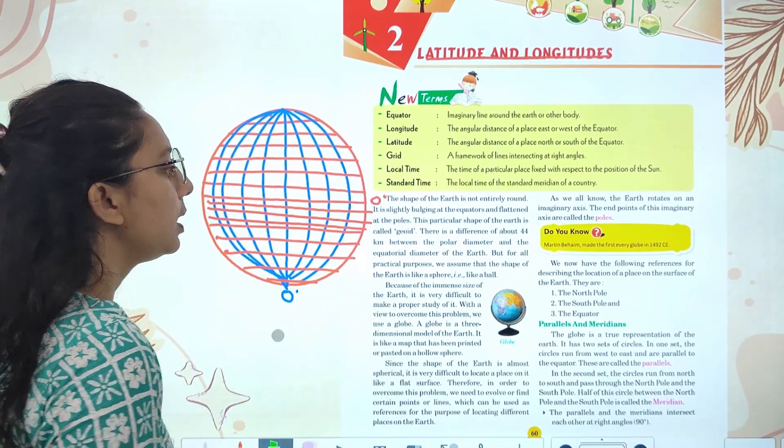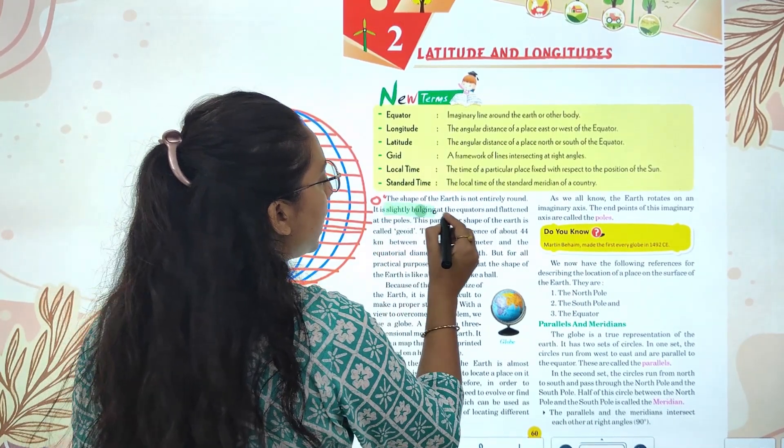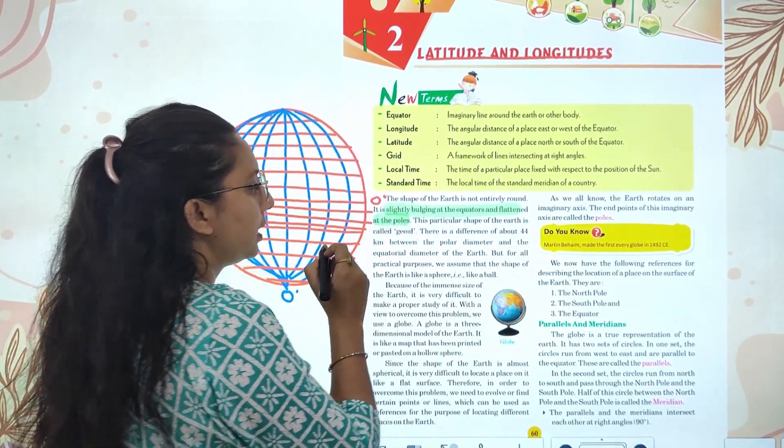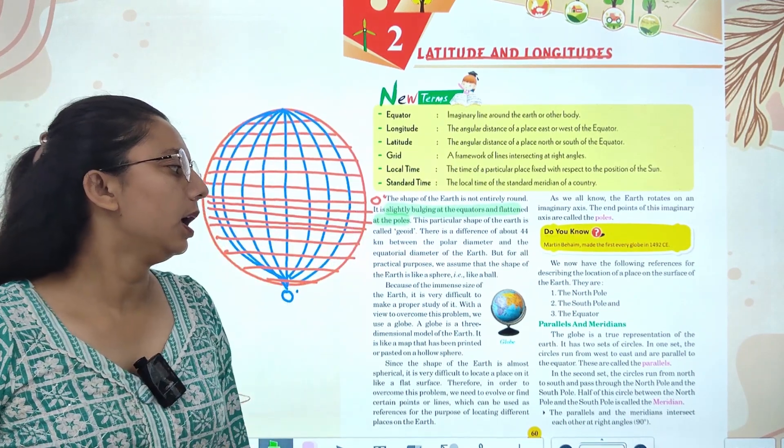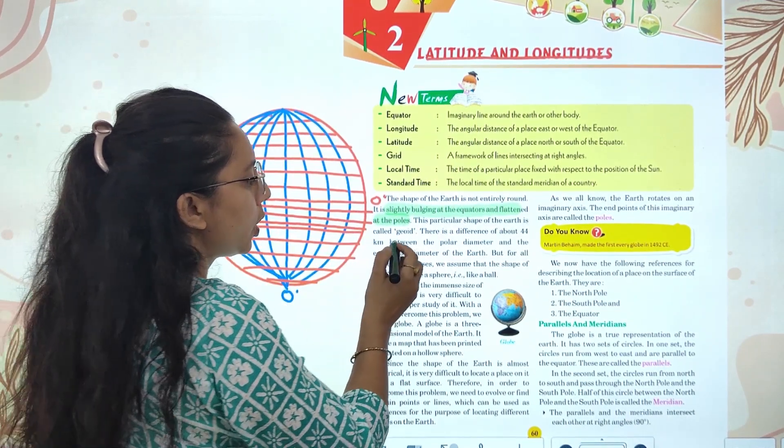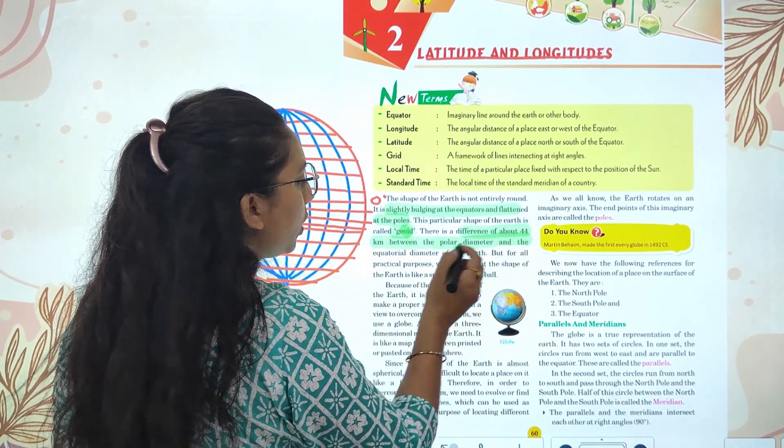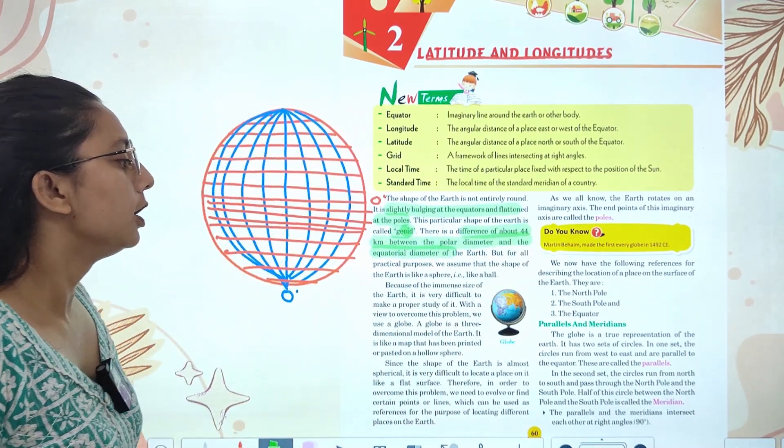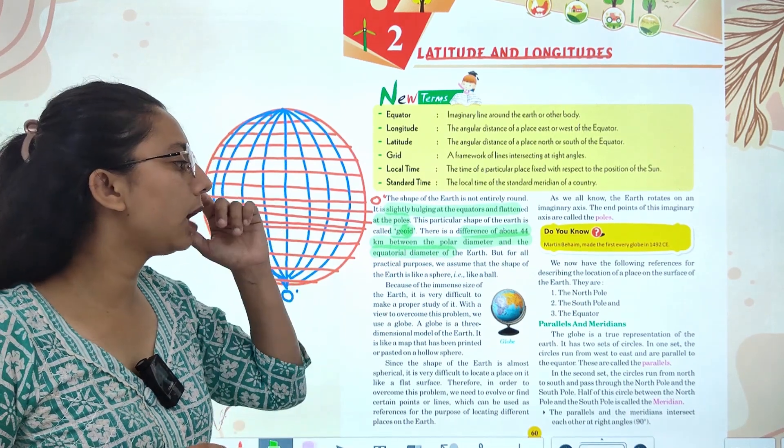The shape is not entirely round, it is slightly bulging at the equator and flat at the poles. The poles are slightly flat and the equator is slightly bulging. This shape is geoid and there's a difference of about 44 kilometers between polar diameter and equatorial diameter.